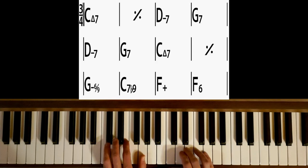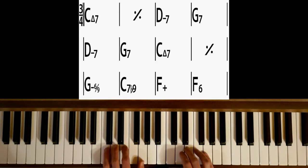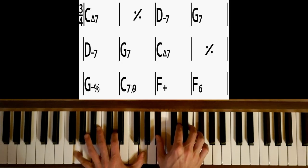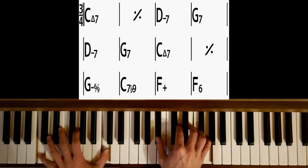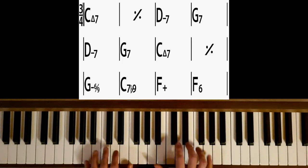Here, instead of starting on a C, we start on a Gm7. And so we do a 2-5.